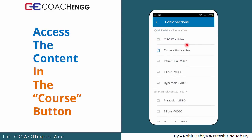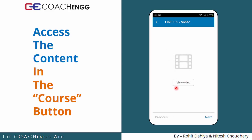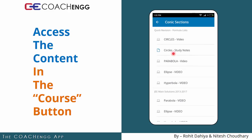यहाँ पर आप जितने भी chapters देख सकते हैं, किसी पर भी tap करके उस chapter के content के अंदर चले जाएंगे। Chapter के content के अंदर उससे related जो भी videos, notes, या practice assignments हैं उन सबको आप one by one access कर सकते हैं। For example, आप circles video पे tap करते हैं तो view video का button आएगा — click करेंगे तो video on हो जाएगी और automatically full screen mode में चली जाती है। Video से बाहर आने के लिए phone का back button दबाएं।